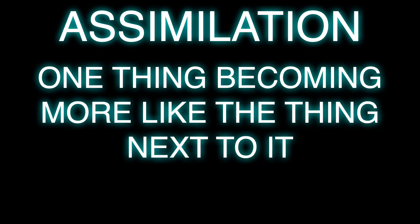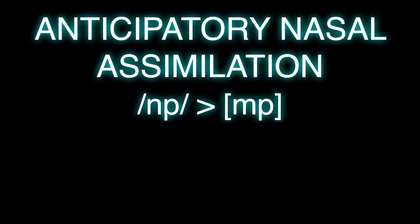All right, so assimilation and dissimilation are very similar things. We're going to start with assimilation, which is essentially one thing becoming more like the thing next to it. Probably the most common example of assimilation in spoken language is anticipatory nasal assimilation, or just nasal assimilation in general. It's essentially when you have a sequence like an N followed by a P becoming an M followed by a P.